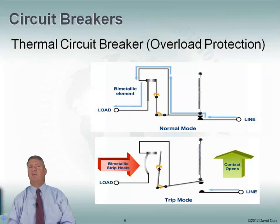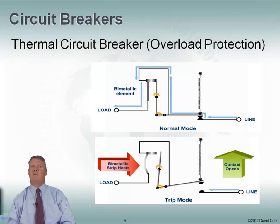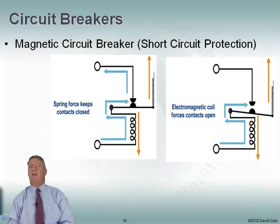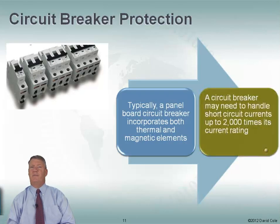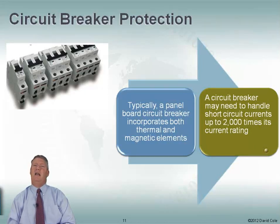There are two types of circuit breakers. One is a thermal circuit breaker that protects against overloads — if I get an overload, it trips the breaker, opens up the circuit, and therefore no more power flows through. The second type is a magnetic circuit breaker, which protects against short circuits. The nice thing is a typical panelboard circuit breaker has both thermal and magnetic elements, so it protects against both overloads and short circuits. A circuit breaker may need to handle short-term currents up to 2,000 times its current rating.